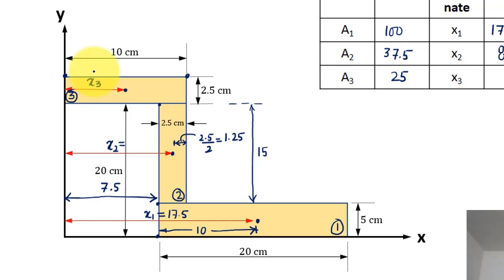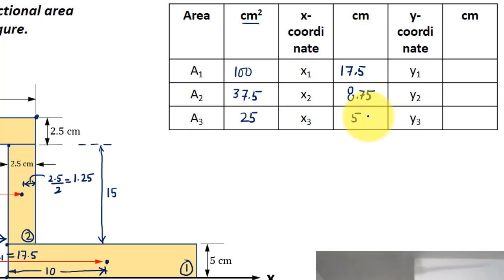In the same manner, you can get the value of x3. x3 is pretty simple, it's absolutely half of 10. Half of 10 is nothing but 5.